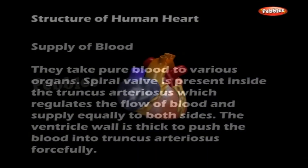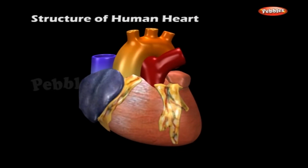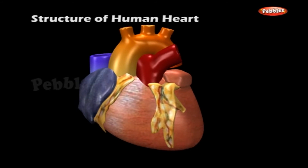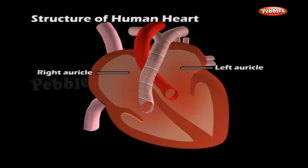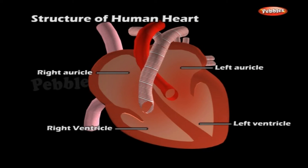The human heart is made up of cardiac muscles and consists of four chambers. It is protected by the double-layered pericardium. The upper two chambers are called auricles; the right auricle is separated from the left auricle by the inter-auricular septum. The lower two chambers are called ventricles; the right ventricle is separated from the left ventricle by the inter-ventricular septum. The auricles and ventricles are separated by the auriculo-ventricular septum and connected by auriculo-ventricular apertures, guarded by cuspid valves. The bicuspid valve is between the left auricle and left ventricle; the tricuspid valve is between the right auricle and right ventricle.